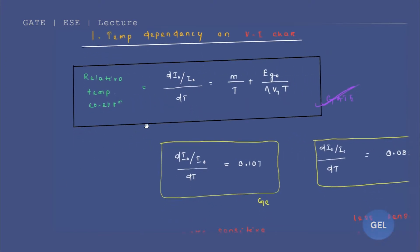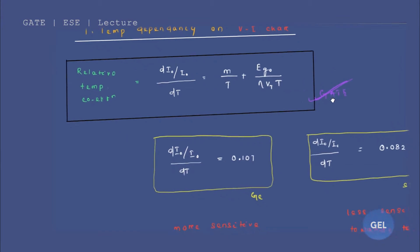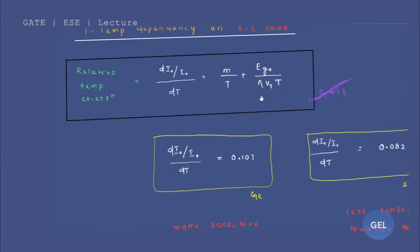Look here carefully. This is a term called relative temperature coefficient. That is nothing but dI0 by I0, divided by dT — where T is temperature, not time. This equals m by T plus EG0 divided by eta times VT times T. Now this formula is very much important for the GATE exam. Just remember this relation.